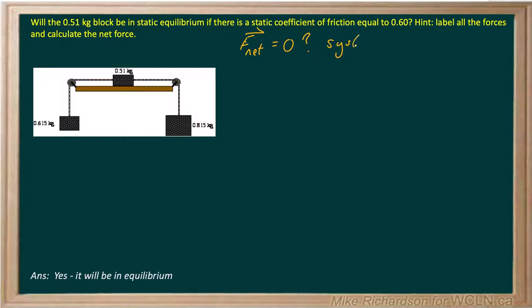So for the entire system, does it add up to 0 when we include friction? First of all, let's identify all the forces that are at play. The mass on the left has a force of gravity, which we'll call Fg1. The one in the middle, because it's a smaller mass, this one's 0.615, this one's 0.51.